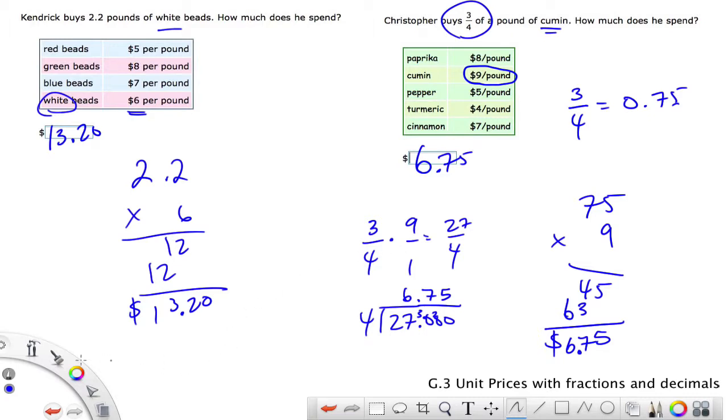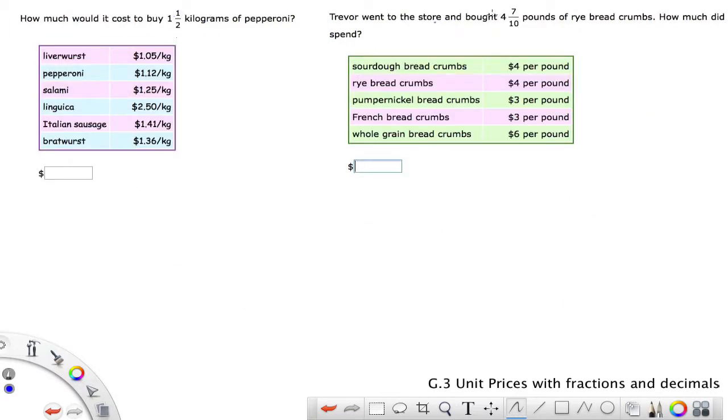We're going to do some more. Now we have both fractions here. This gets a little more complicated because we've got 1 and 1 half, so we just want to convert that to 1.5 as a decimal. Much easier to multiply. In this case, pepperoni.